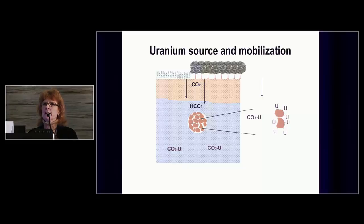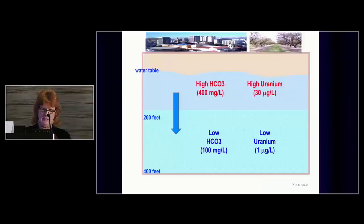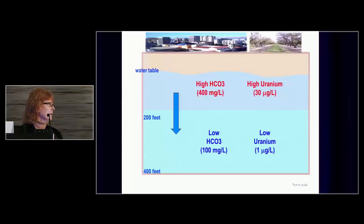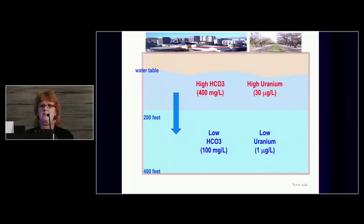If you look at the eastern San Joaquin Valley profile, you see high uranium in the shallow groundwater along with high bicarbonate concentrations. Those concentrations of bicarbonate and uranium decrease with depth and with increasing groundwater age as you go deeper in the system. Also, municipal and irrigation pumpage is pulling this high-bicarbonate, high-uranium water deeper into the system.